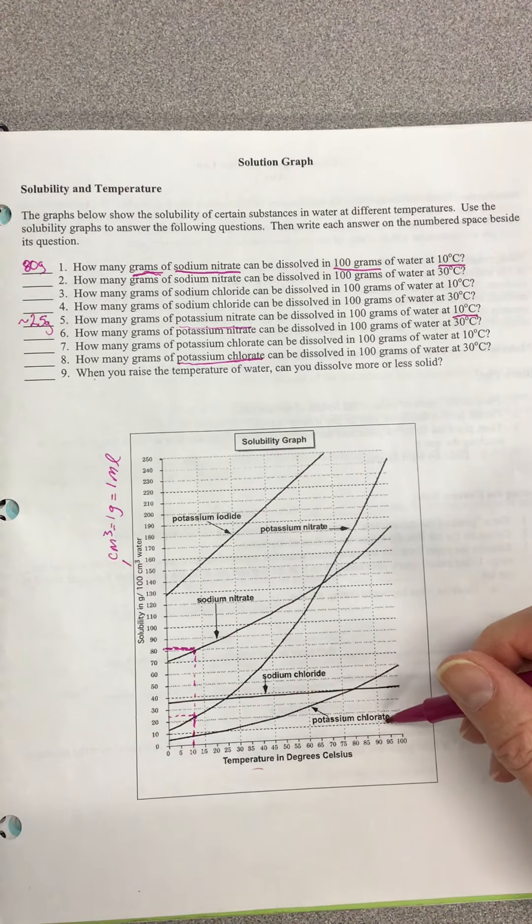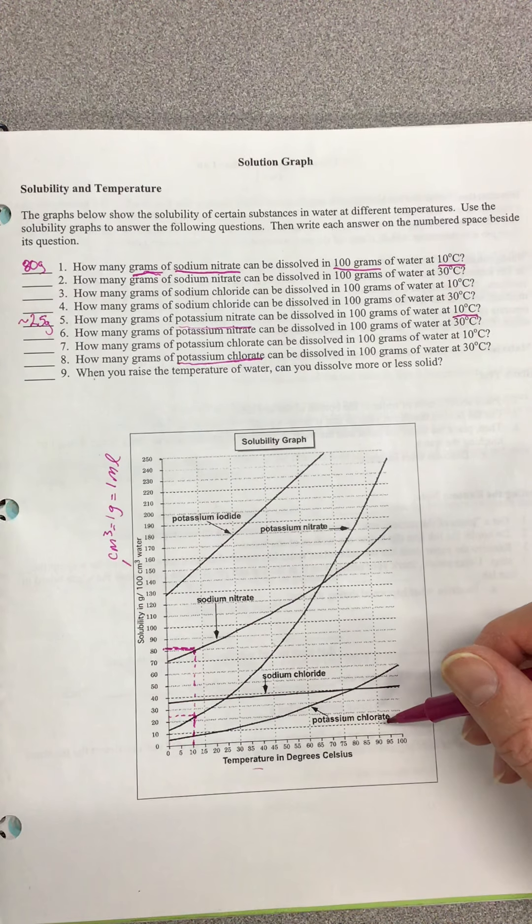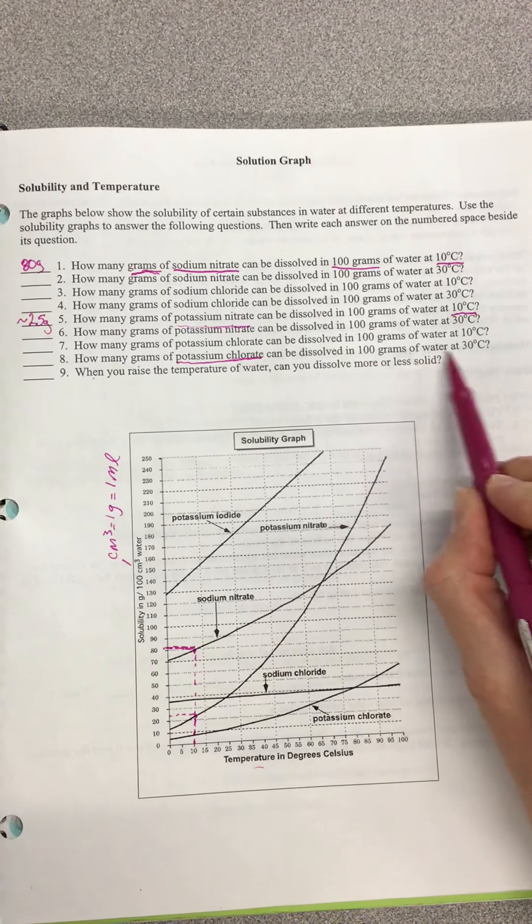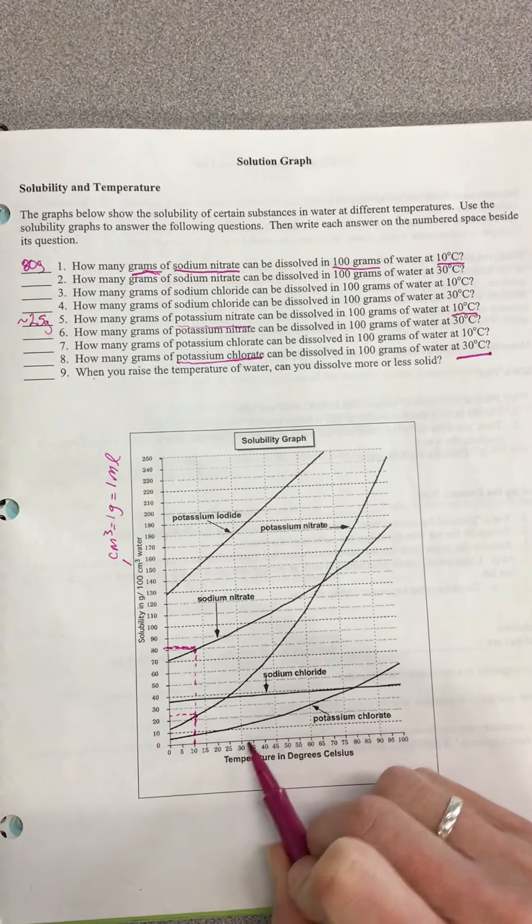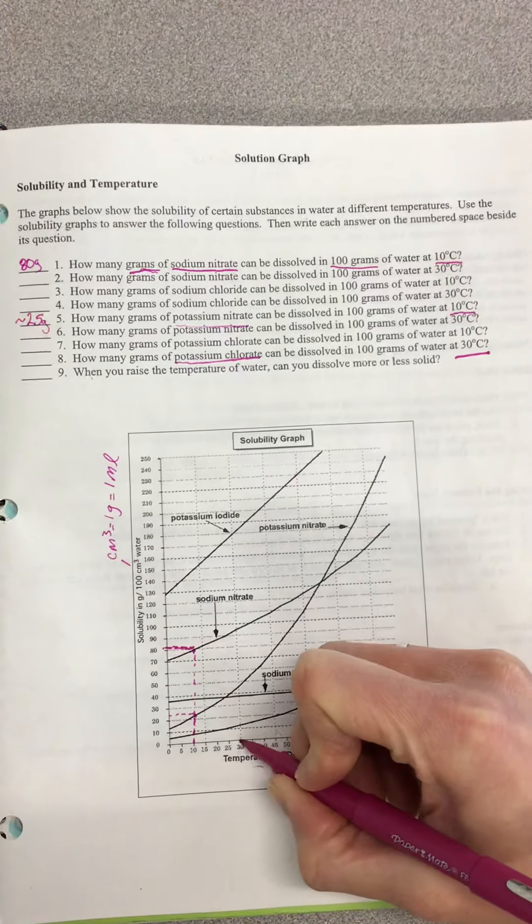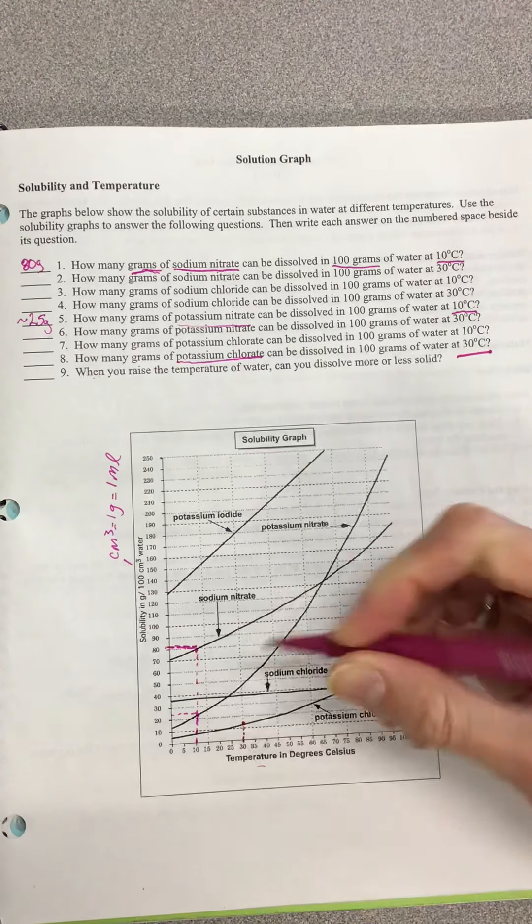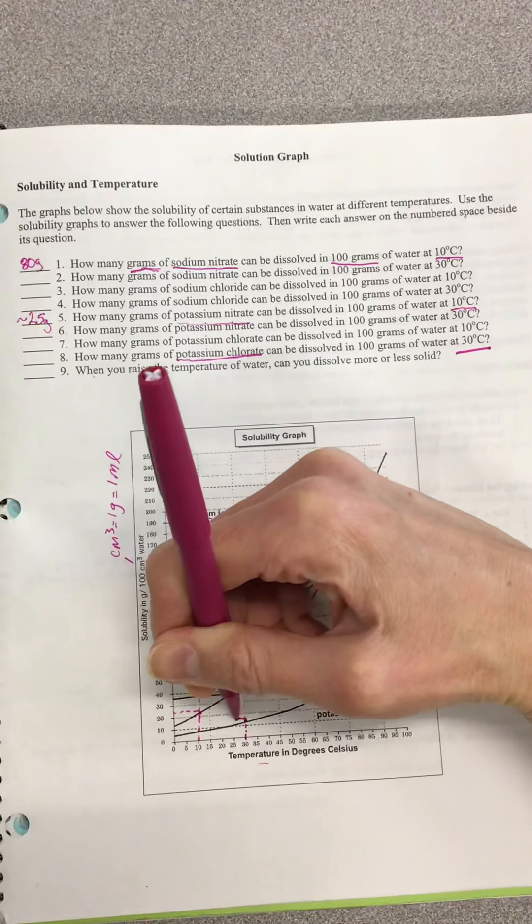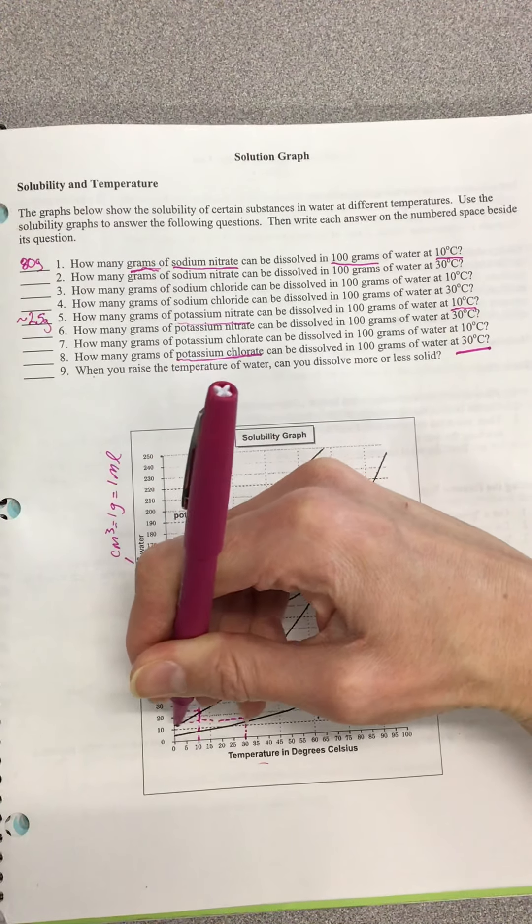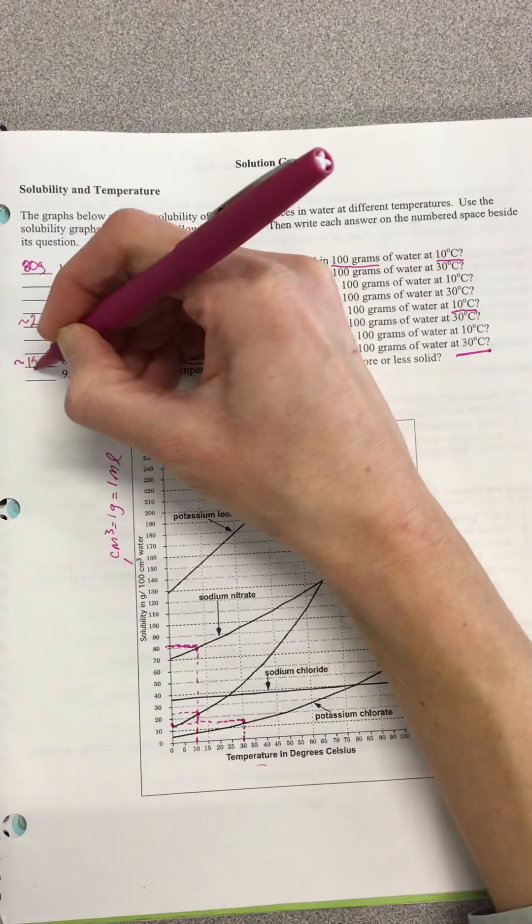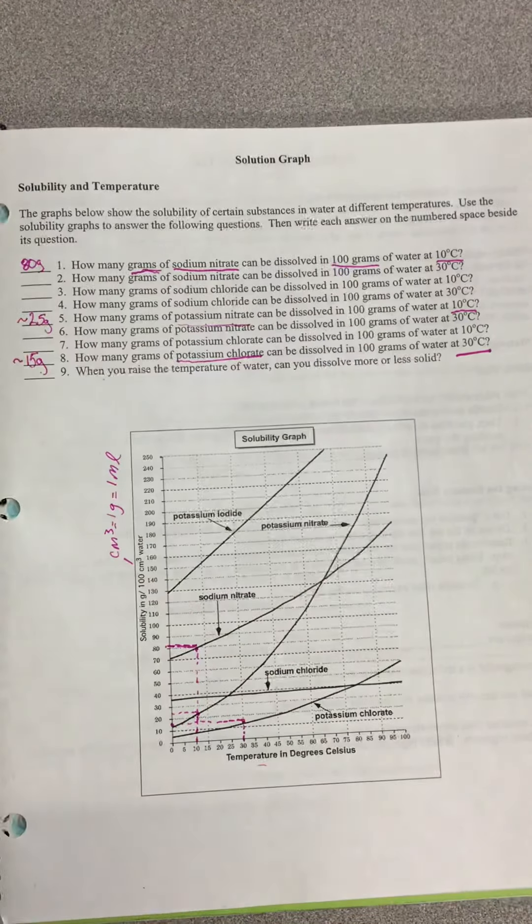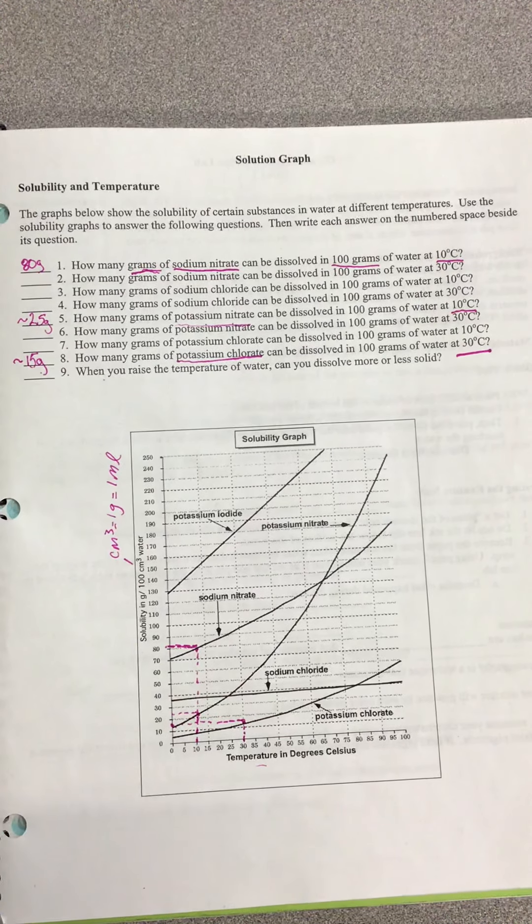Let's do one more. Let's look at number eight, potassium chlorate, which is right here. How many grams of potassium chlorate can be dissolved in 100 grams of water at 30 degrees Celsius? Let's go up to 30 degrees Celsius, and we're going to go up to our potassium chlorate line, and then we're going to go over. That one is maybe 15 grams.